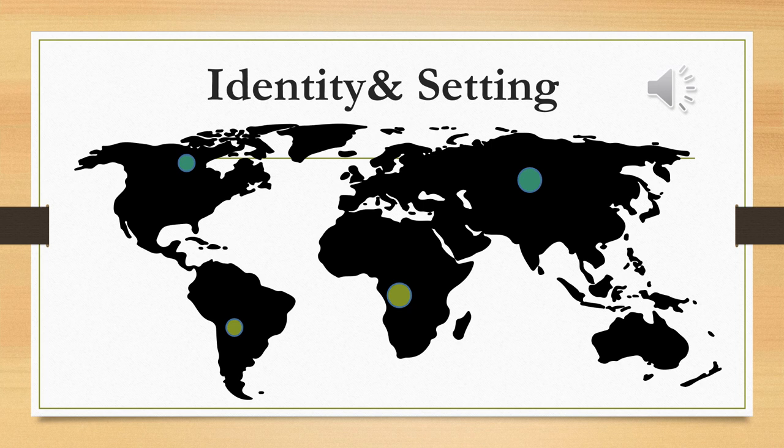Starting off with identities and settings: identities refer to characteristics, traits, beliefs, values, and cultural affiliations that define individuals or groups. These identities can be shaped by various factors, including personal experiences, social interactions, historical context, and cultural background. The setting of a story — whether it's a physical location, time period, or cultural environment — can significantly influence and shape the identities of the characters within the narrative.